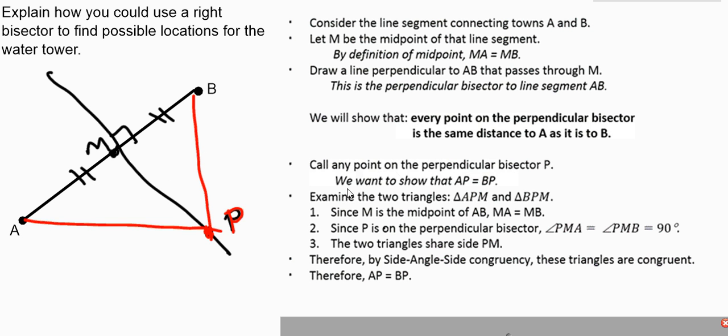And here's how we do it. Again, it's using congruent triangles. Since M is the midpoint, we know that MA is the same as MB. Since P is on the perpendicular bisector, we know that this is a 90 degree angle and this is a 90 degree angle. So we have 90 degree angles or the same angle. And the two sides share a length PM. And so by side angle side congruency, these are congruent triangles. And therefore, AP is the same length as BP. There you go. Kind of formal for grade 10s, but not that hard.